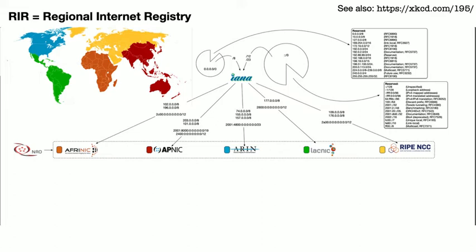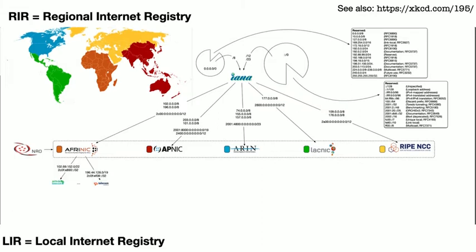By the way, Randall Munroe, the artist behind XKCD, did a neat illustration of the IP space, which I recommend you check out. The RIRs together are loosely organized as the Number Resource Organization, or NRO, which helps coordinate Internet governance on this level. Now each of the RIRs have been assigned IP space by IANA, and can then further divide and assign those netblocks to the so-called local internet registries to use or further allocate.